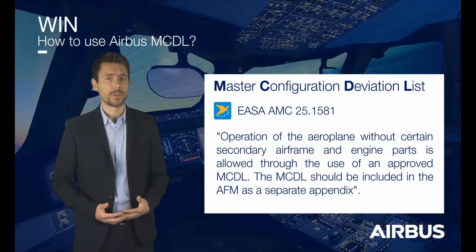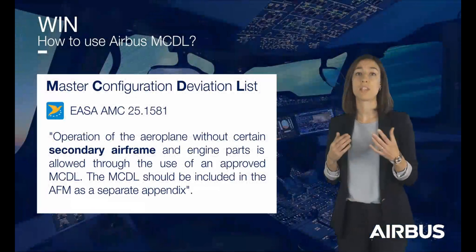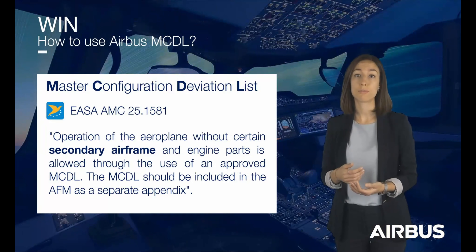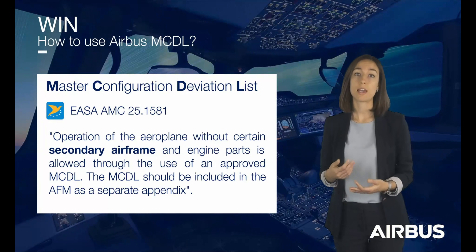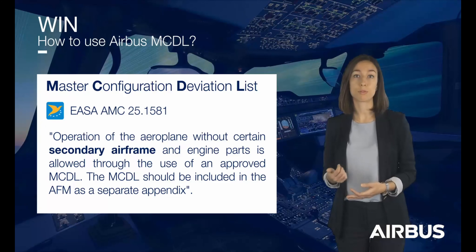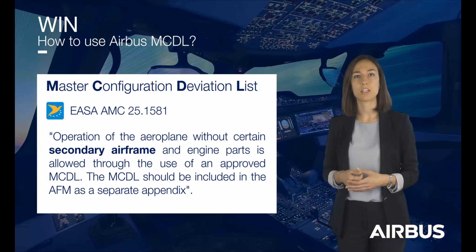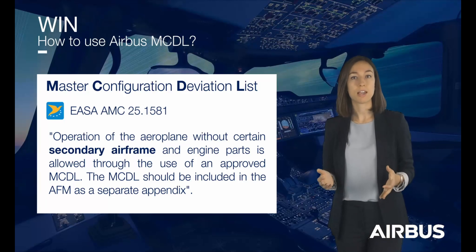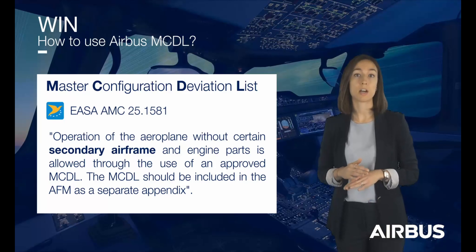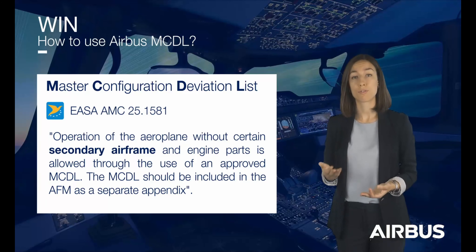But what is considered a secondary airframe? According to the EASA, the airframe includes fuselage, booms, nacelles, cowlings, fairings, airfoil surfaces including rotors but excluding propellers and rotating airfoils of engines, and landing gears and their accessories and controls. In fact, secondary airframe refers to elements that are not part of the main structure, like fuselage skins or rings, for example.